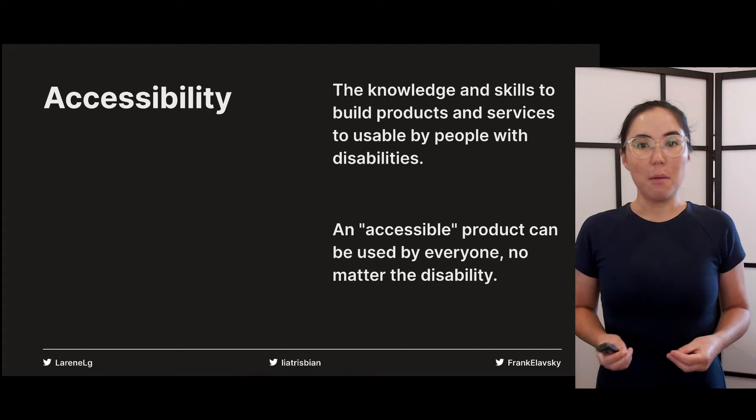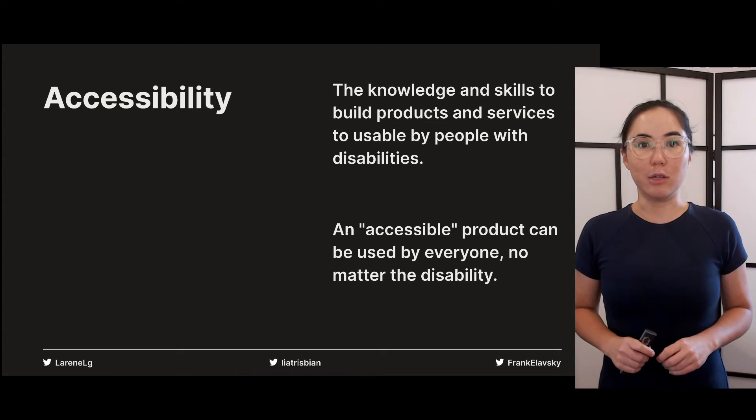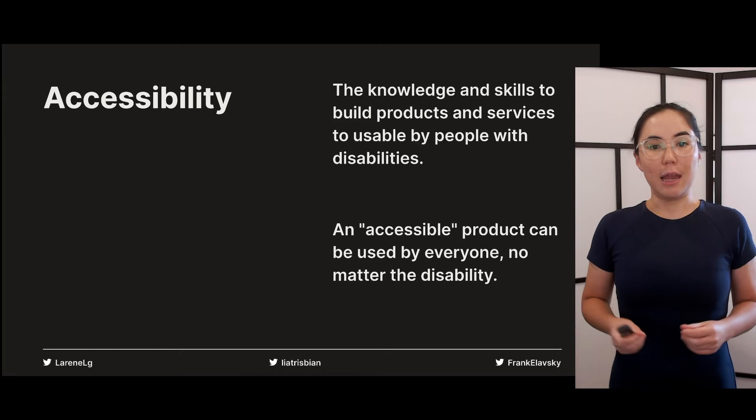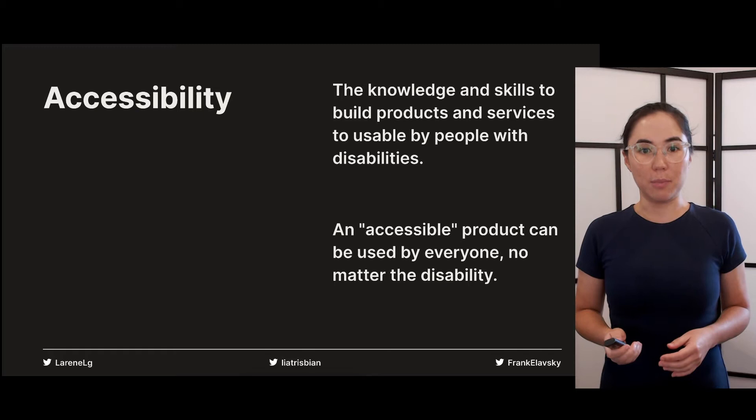Accessibility in the general, literal sense is how easily something can be accessed. But when we talk about digital accessibility, we are talking about the discipline, the knowledge and the skills required to build digital products that are usable by everyone, in particular those with disabilities. When we say that something is accessible, it means that every person using the product can achieve the same goal or outcome no matter their disability.